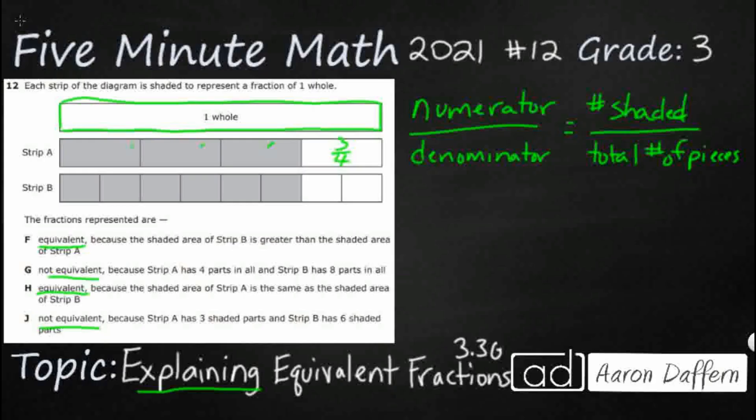Strip B, a lot more pieces. One, two, three, four, five, six pieces that are shaded, and then seven, eight pieces that are not. So here's the question. Is three-fourths equal to six-eighths?